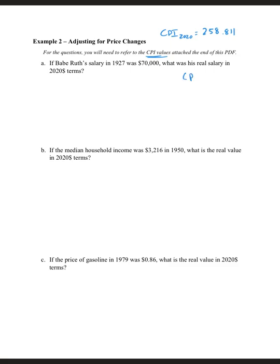We need to find the CPI of 1927, which is 17.4. We'll need the CPI in 1950 for part B, which is 24.1. And last but not least, for part C, I'll need the CPI in 1979, which is 72.6. Now I have everything that I need to solve this out.